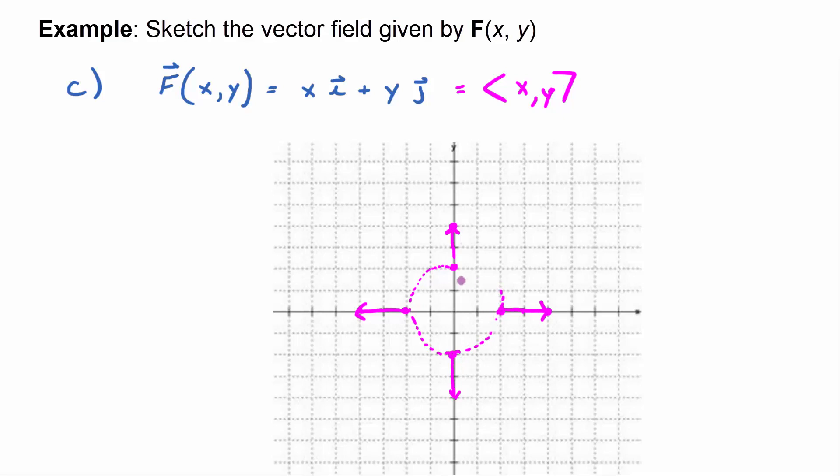The same distance that the tail point is from the origin. So any vector on this circle is going to point outward like that, and it's going to look kind of like an explosion, except that as you go out, the vectors get bigger.